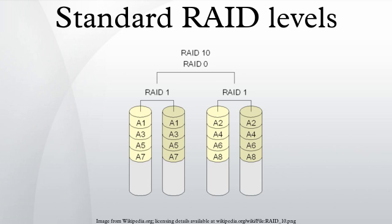RAID 6 extends RAID 5 by adding an additional parity block. Thus it uses block-level striping with two parity blocks distributed across all member disks. RAID 6 does not have a performance penalty for read operations, but it does have a performance penalty on write operations because of the overhead associated with parity calculations. Performance varies greatly depending on how RAID 6 is implemented in the manufacturer's storage architecture, in software, firmware, or by using firmware and specialized ASICs for intensive parity calculations. It can be as fast as a RAID 5 system with one fewer drive.